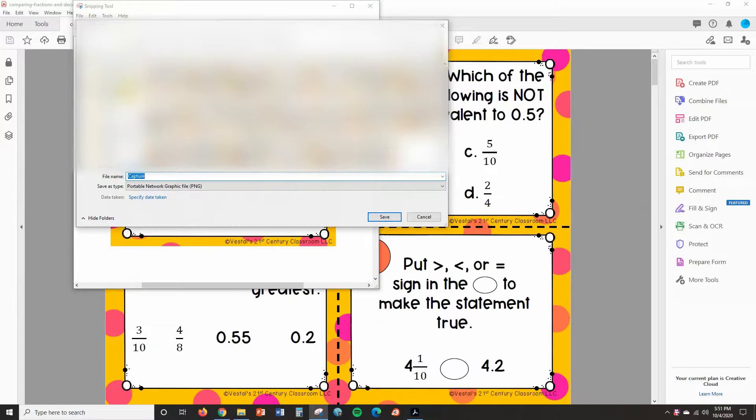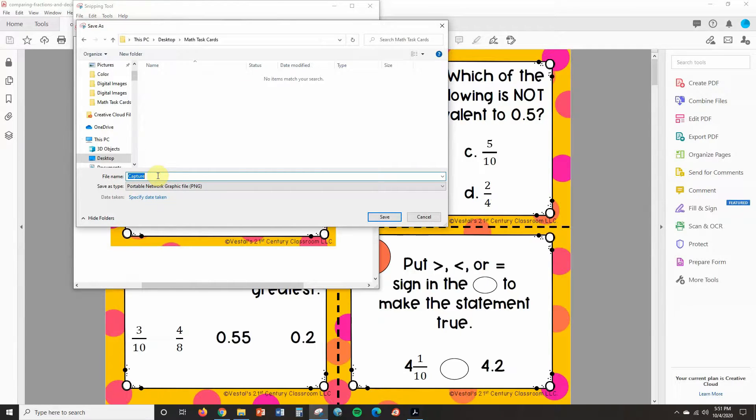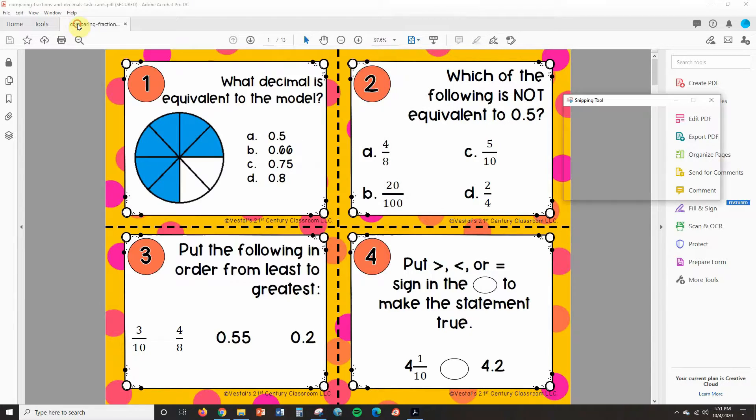And then I want to save this as an image. So let me just find the folder that I want to save it to. And usually I just name them with the number of the task card. That's gonna make it the easiest when you are converting this to the digital inside of Google Forms.